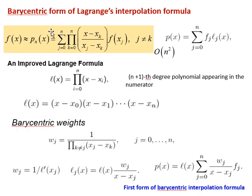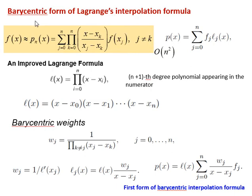We have seen the interpolation formula for Lagrange, which has a specific form. Interpolating with the Lagrange formula is not very efficient, since for every new location X we have to perform n-squared operations. There exists a variant called Barycentric interpolation, and we can reduce the number of operations. It is the same as the Lagrange interpolating formula, but we gain time.